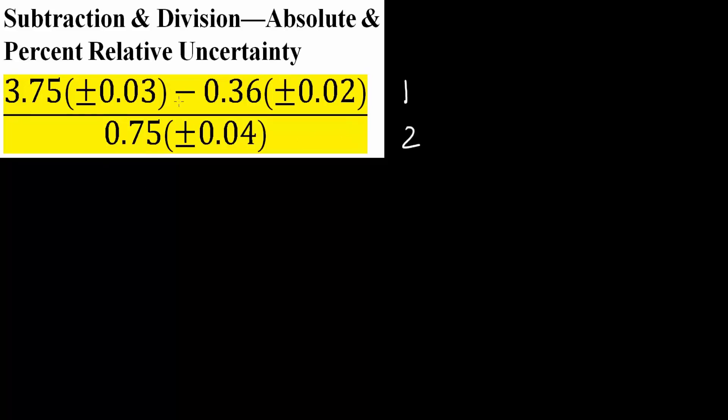We ignore the denominator for now. We just have 3.75 ± 0.03 minus 0.36 ± 0.02. So 3.75 minus 0.36 gives us 3.39 plus or minus, and from here we would get the absolute uncertainty.